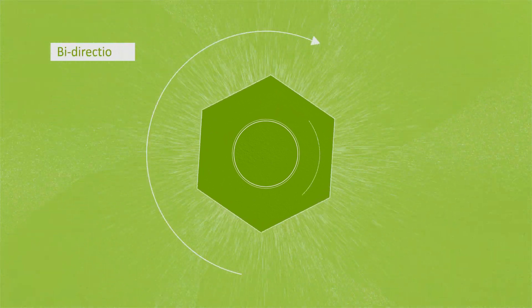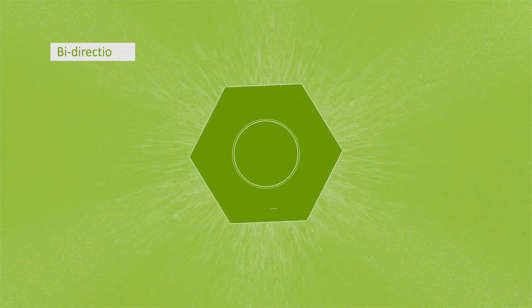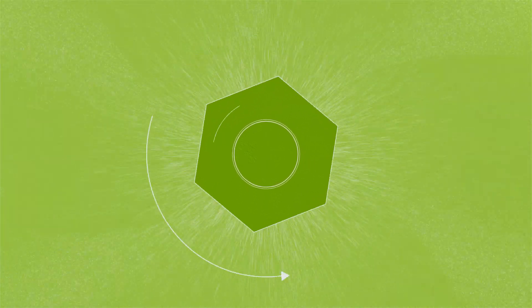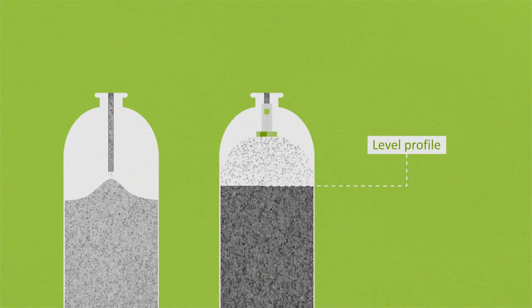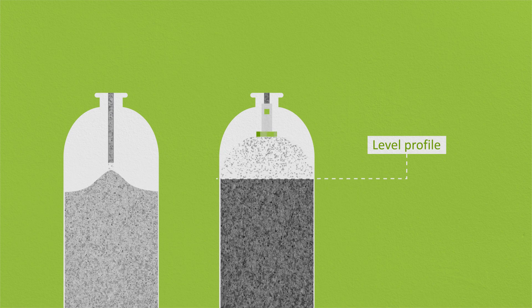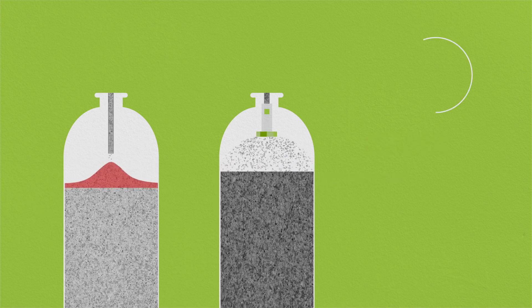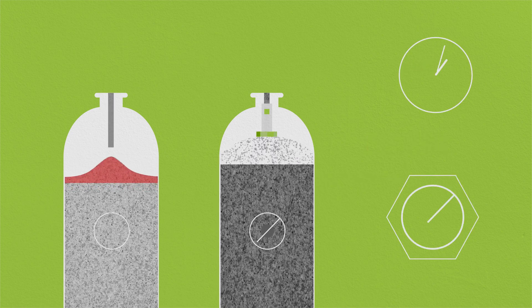The bi-directional operation ensures an even profile is maintained despite any reactor internals. The level profile also removes the need to manually distribute the top catalyst layer, saving considerable time and minimizing vessel entry.